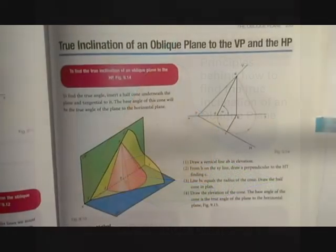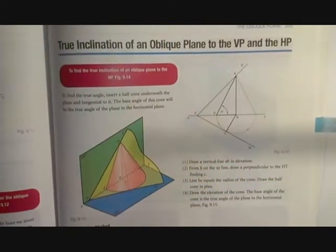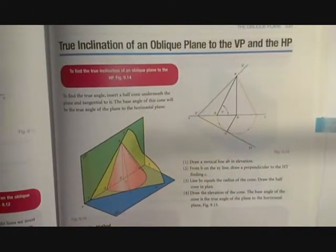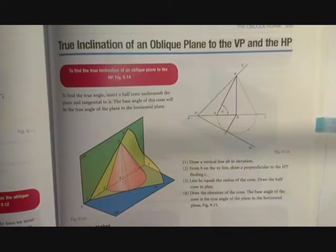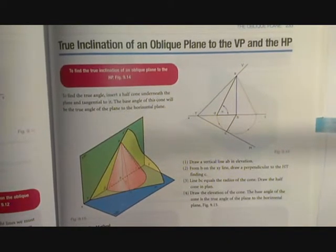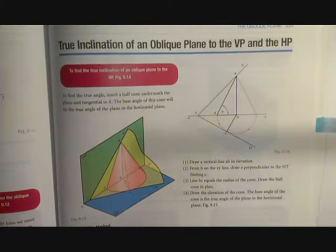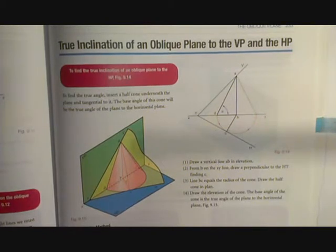In this video we will determine the principles involved to use the Cohn method to find the true inclination of an oblique plane to the horizontal plane. Here in this example we have a step by step construction of the process of the Cohn method. We will have a look at the principles involved to create this.